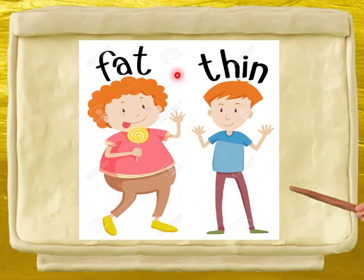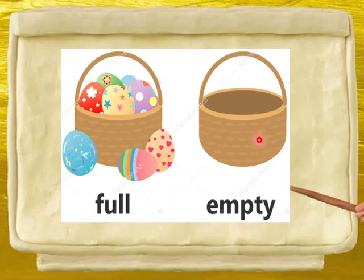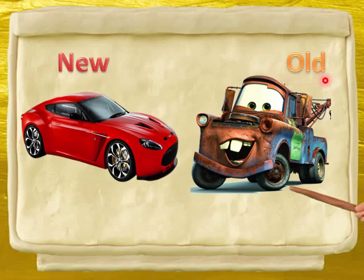This boy is fat. And this boy is thin. तो fat का opposite है thin, यानि पतला. This basket is full of Easter eggs. And this basket is empty. This is full and this is empty, यानि ये भरी हुई है और ये खाली है. New car. This is old car. This is new and this is old. तो new का opposite क्या हुआ? Old.